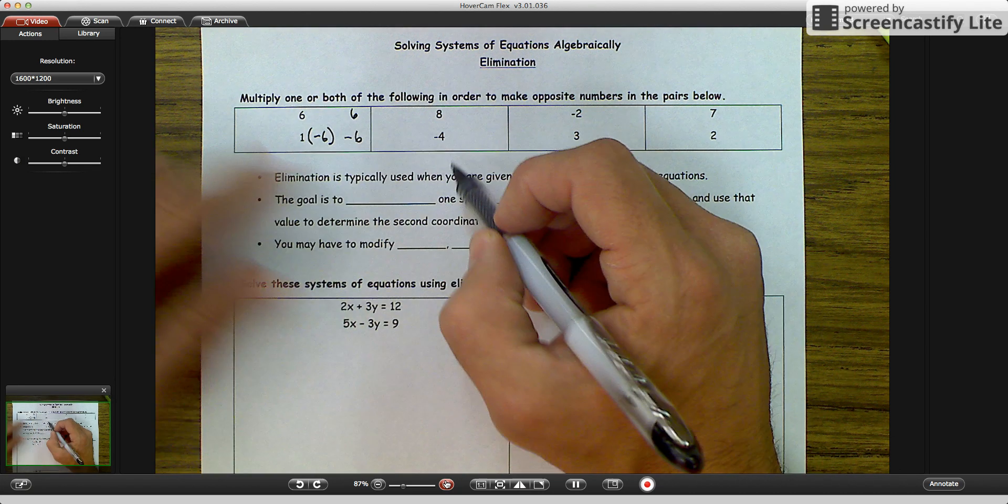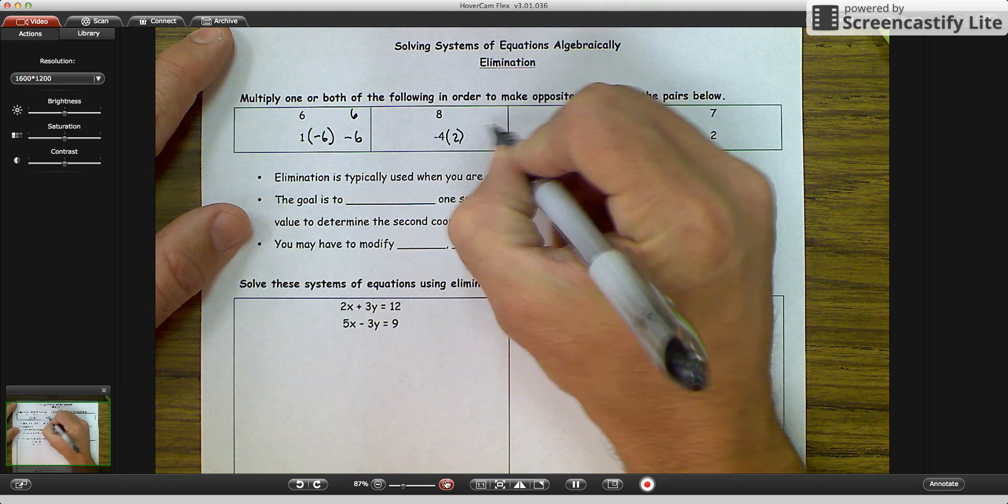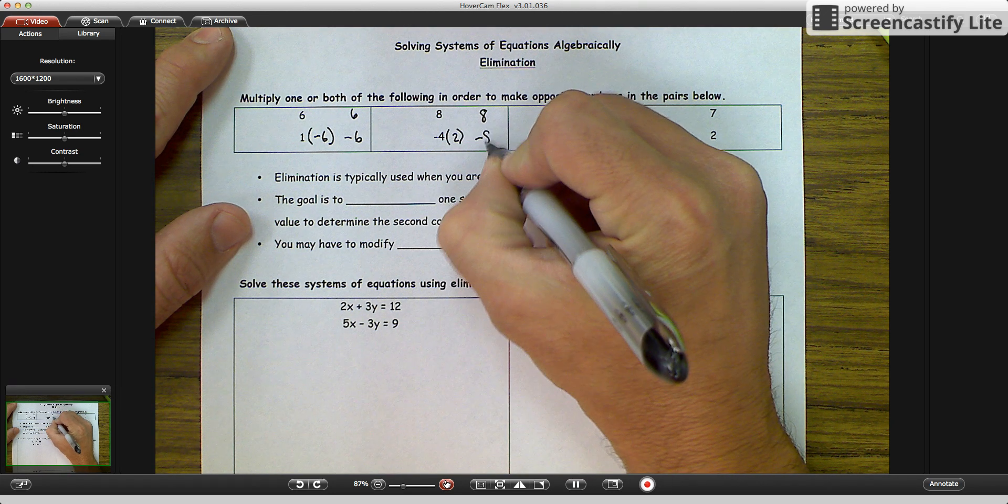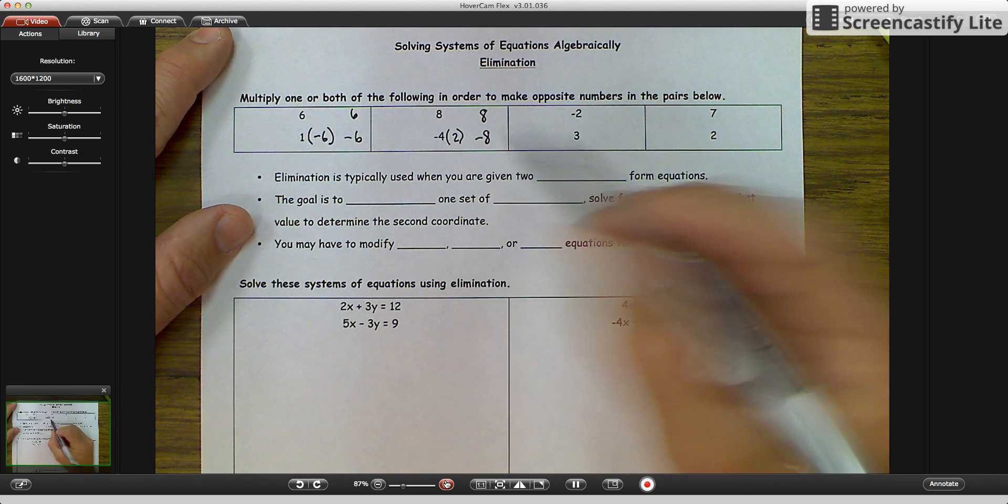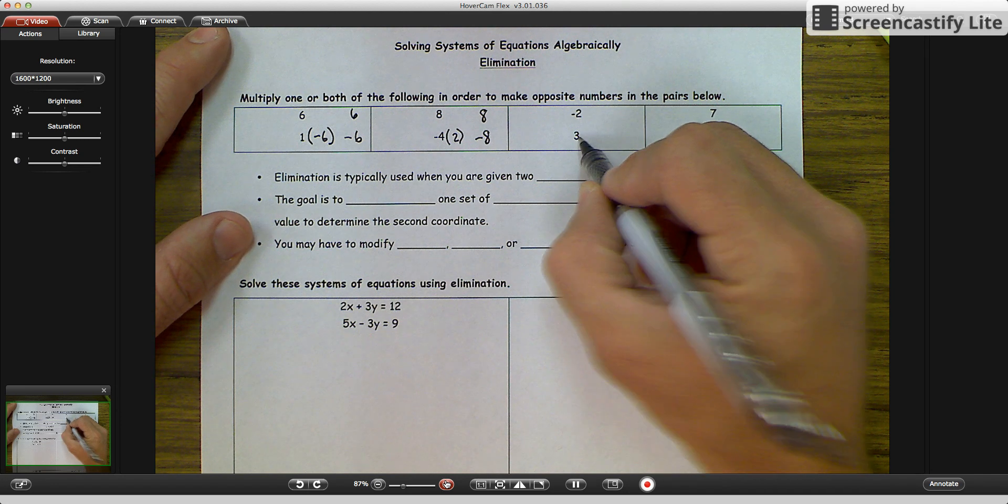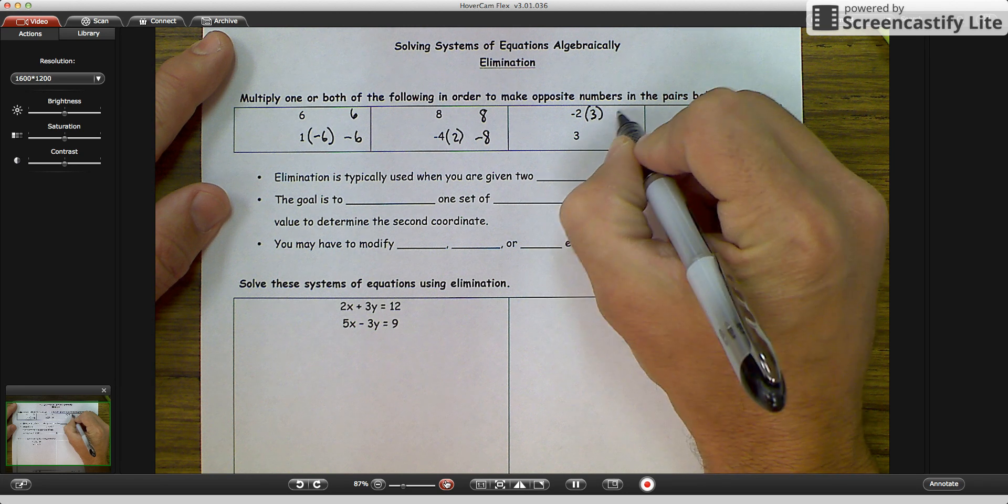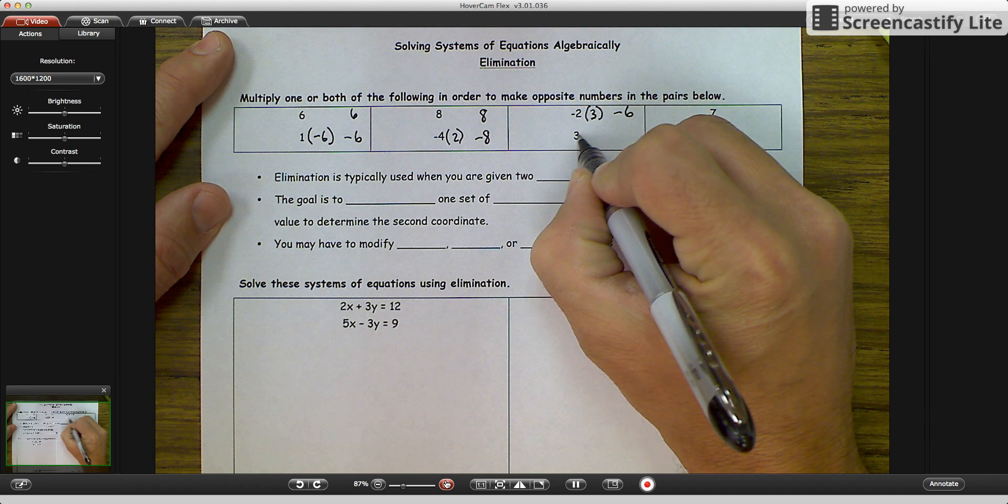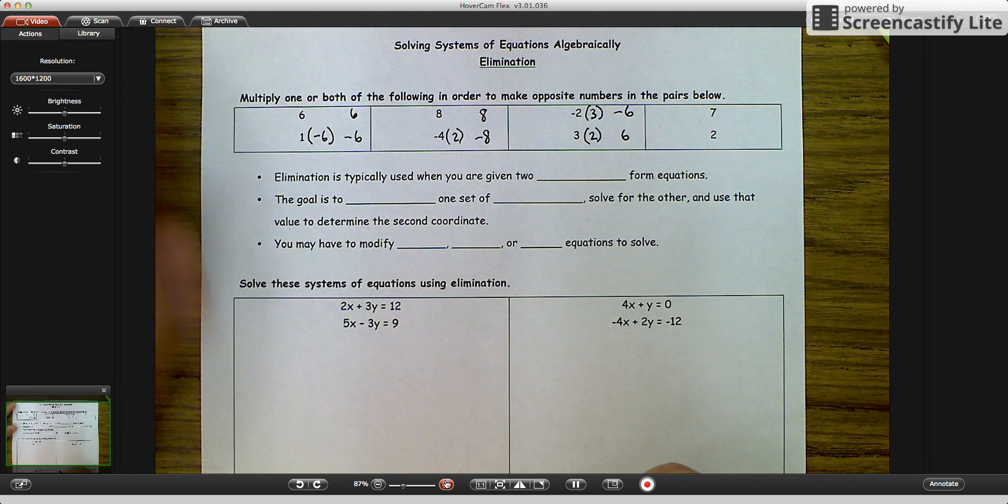So if we have 8 and negative 4, we would multiply the negative 4 by 2, and you would get 8 and negative 8. Again, we've only had to change multiply one term. In this one, a negative 2 and a positive 3, well, we can multiply a negative 2 times 3, and you get a negative 6. Multiply 3 times 2, and you get positive 6. And they would eliminate themselves.